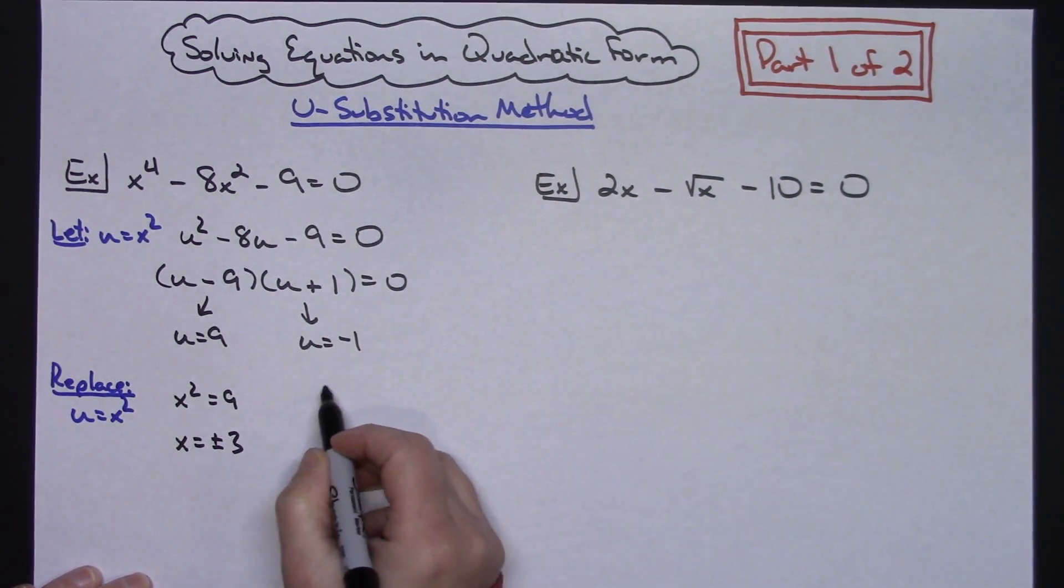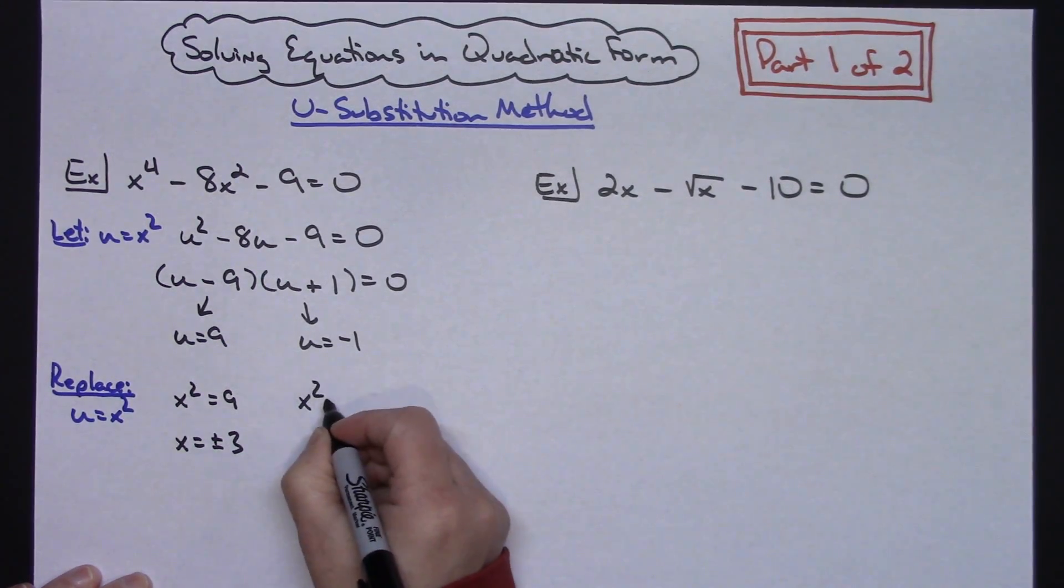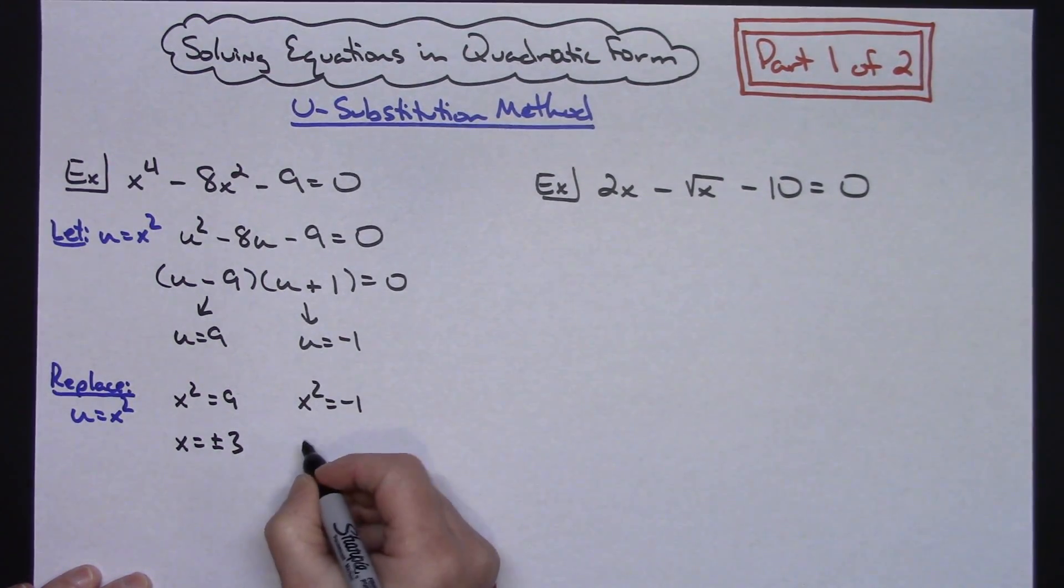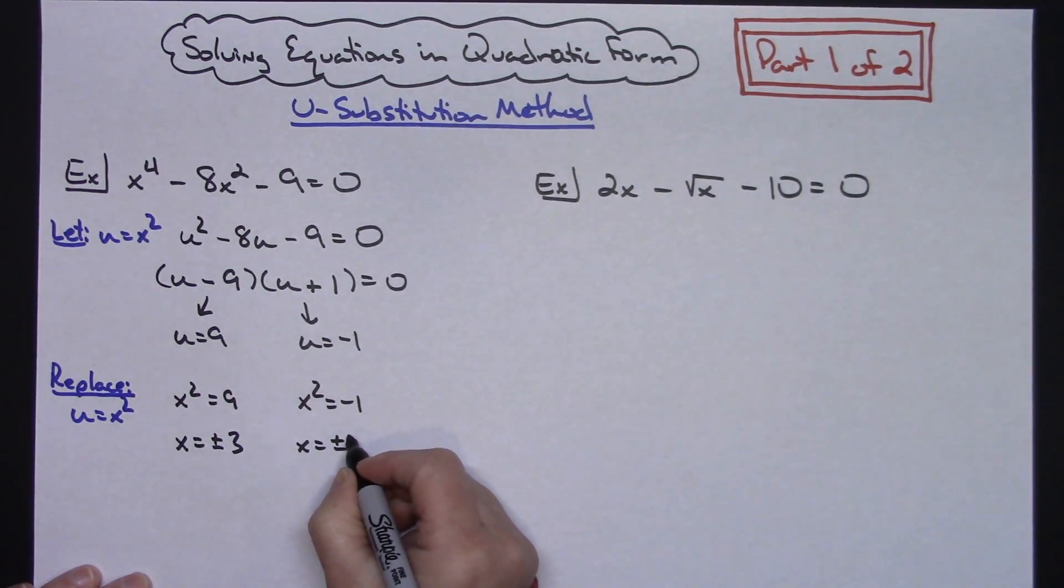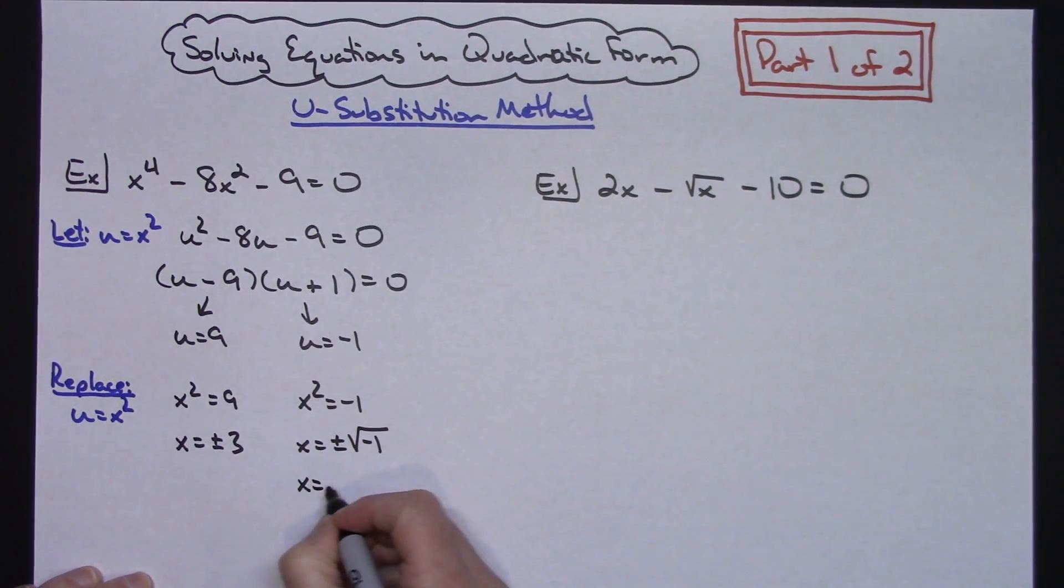Doing the same thing on this part of the equation, replacing that u with the x^2. x^2 = -1. Taking the square root of both sides, x = ±, I'm actually going to write this one out so we can see it, √(-1). That's going to lead us to our imaginary solutions. So x = ±i right there.